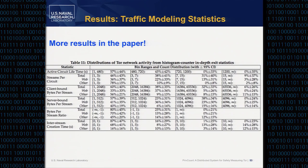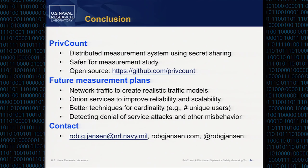There are a lot more results in the paper with various statistics that can be used for modeling purposes — please see the paper if you're interested. In conclusion: we designed a distributed measurement system using secret sharing, conducted a Tor measurement study, and the system PrivCount is open source and available on GitHub. We have a bunch of future plans for what to measure next. Happy to take questions.